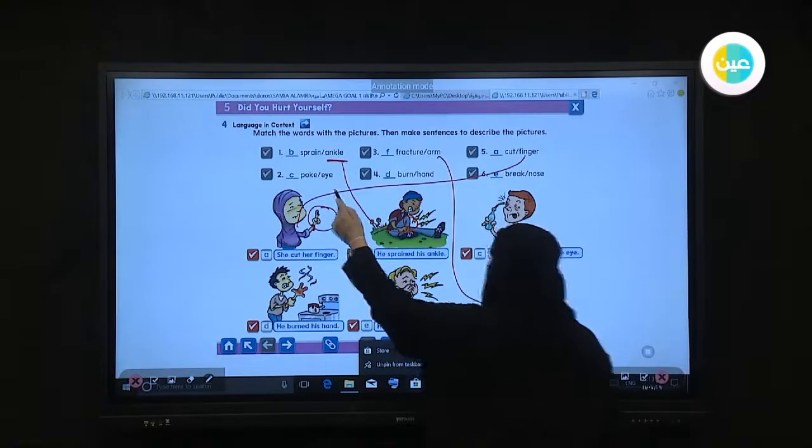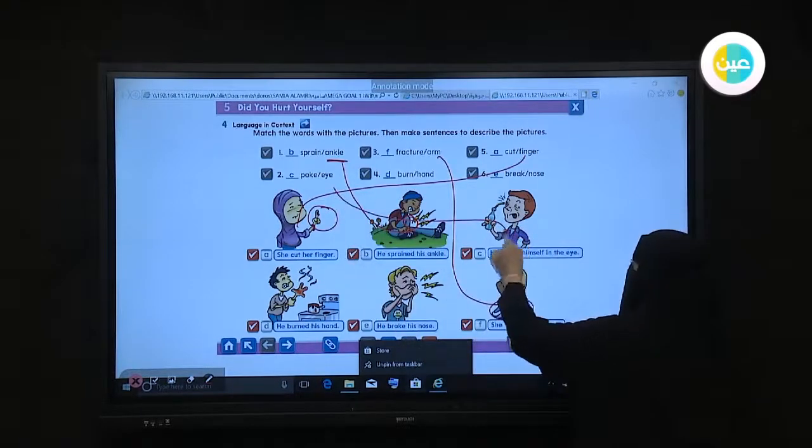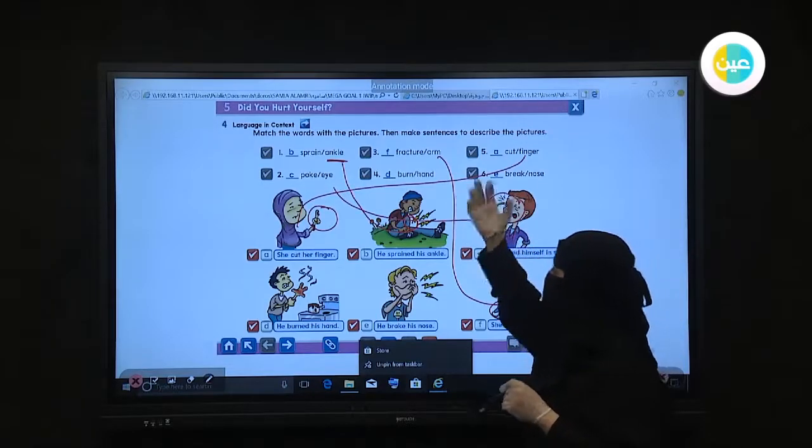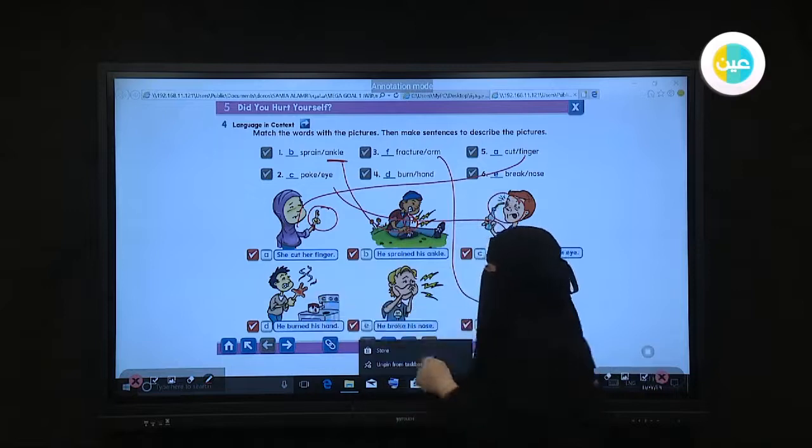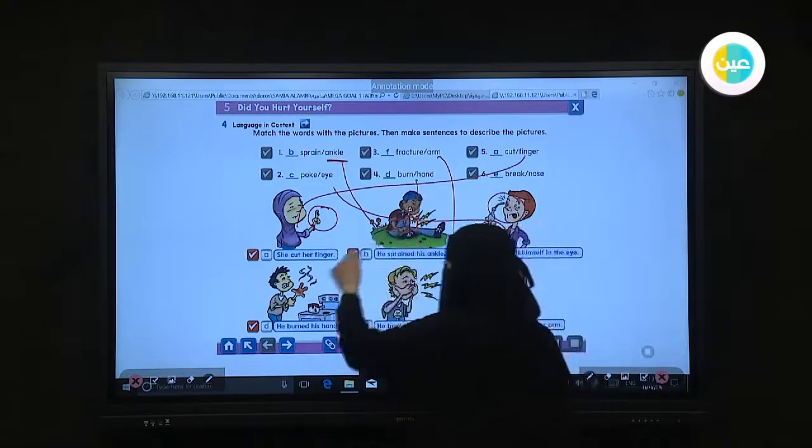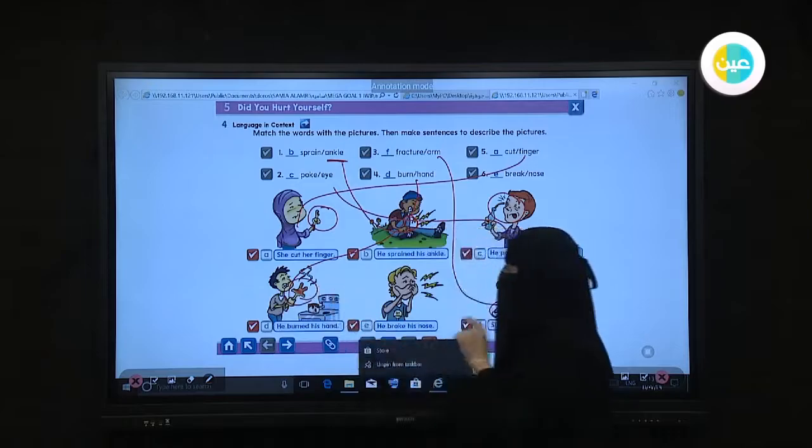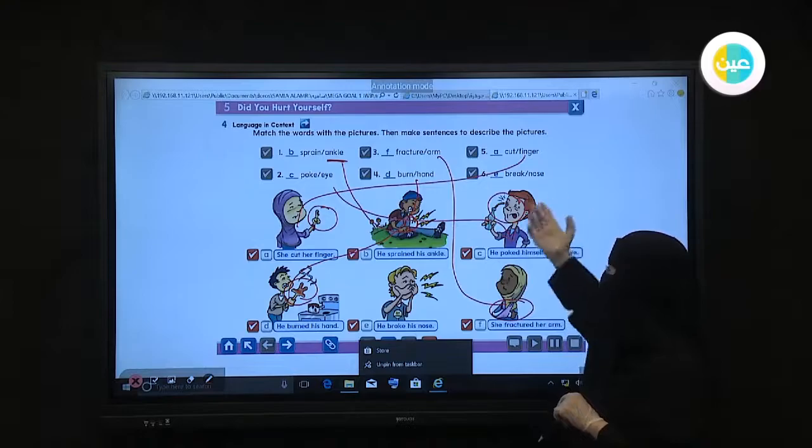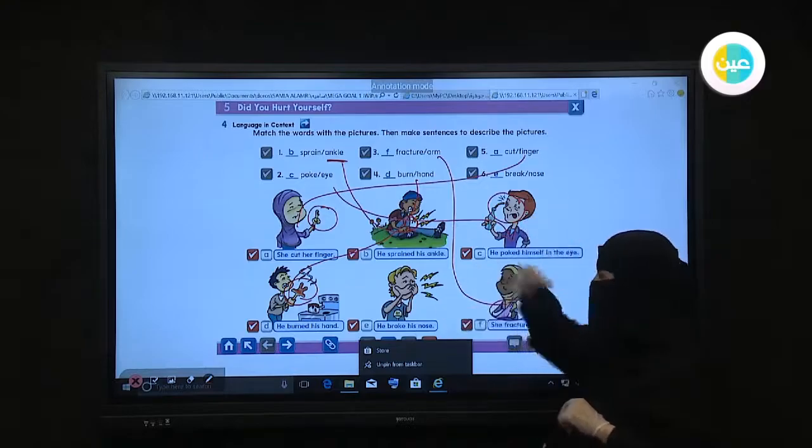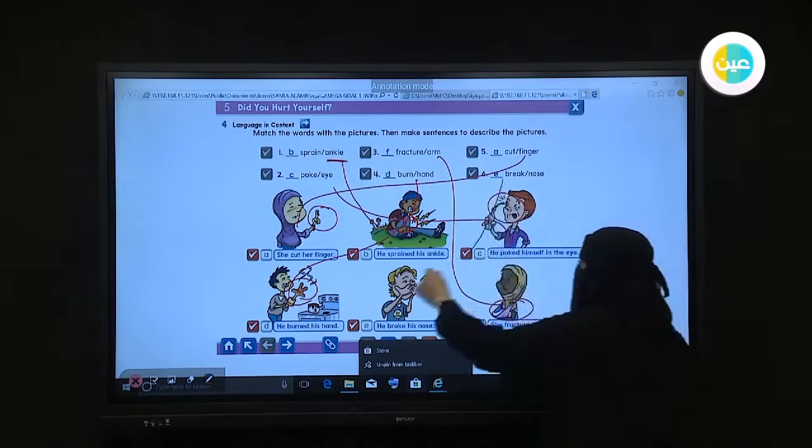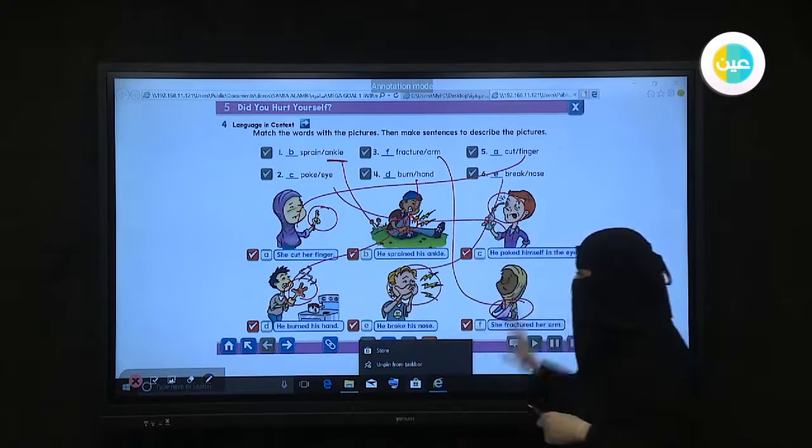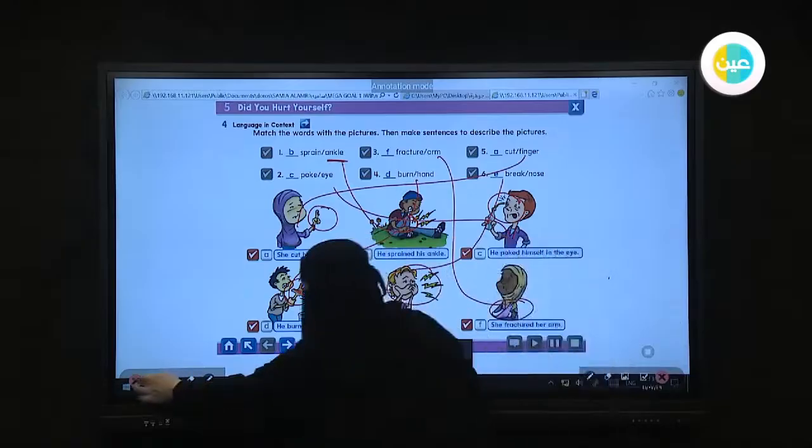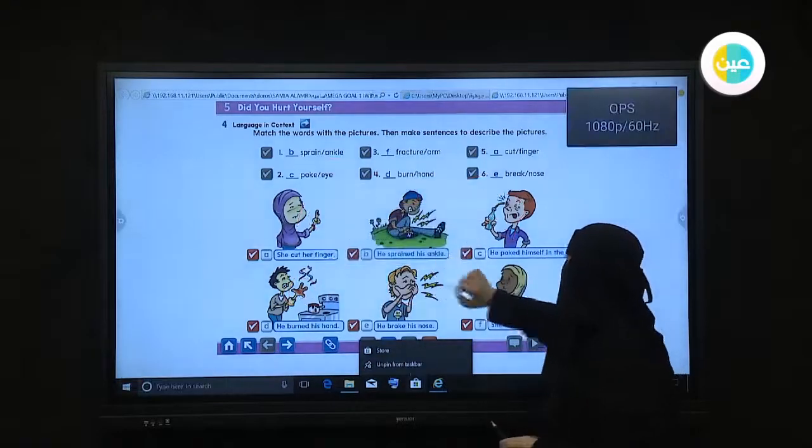After that we have poke eye. That one comes with C. Burn hand. He burned his hand. So four comes with D. And the last one, six, comes with E. Break nose. Okay, this is the first exercise for today. Let we transfer to another point on that lesson.